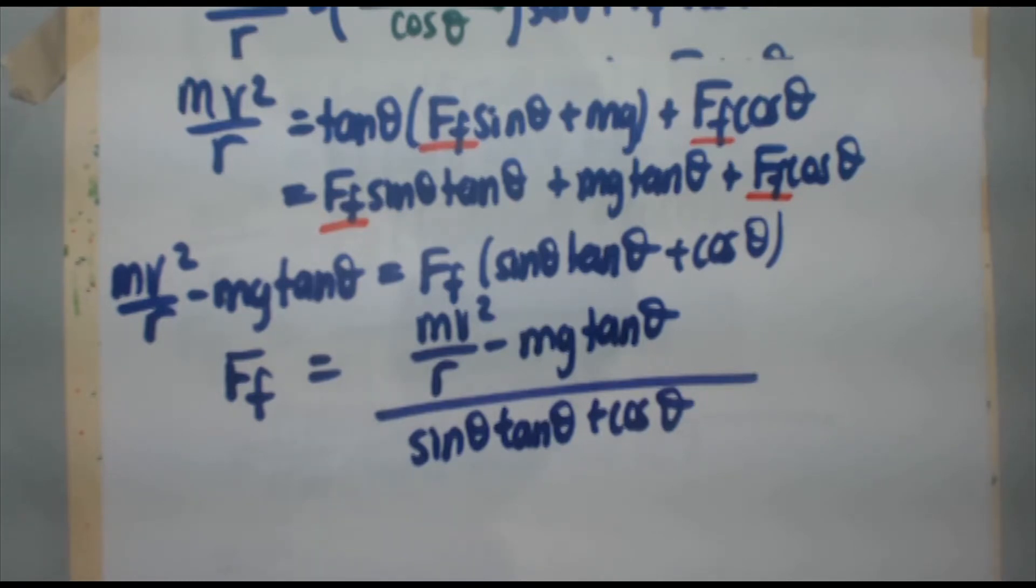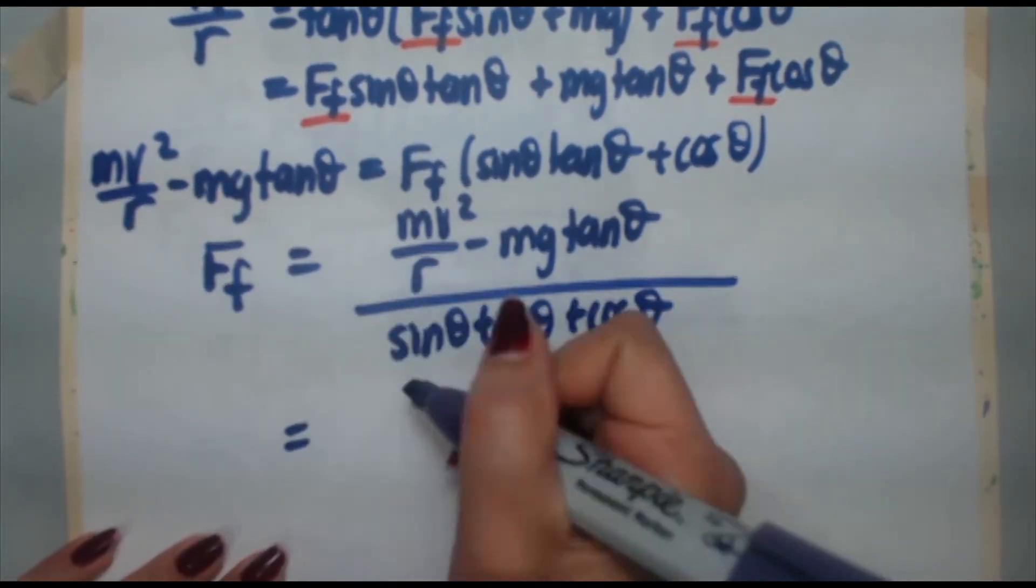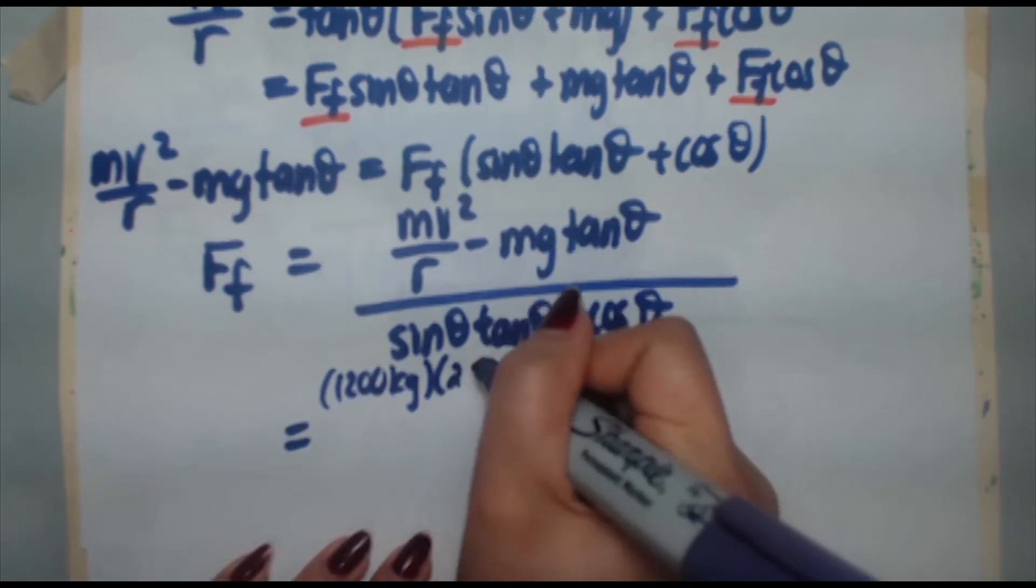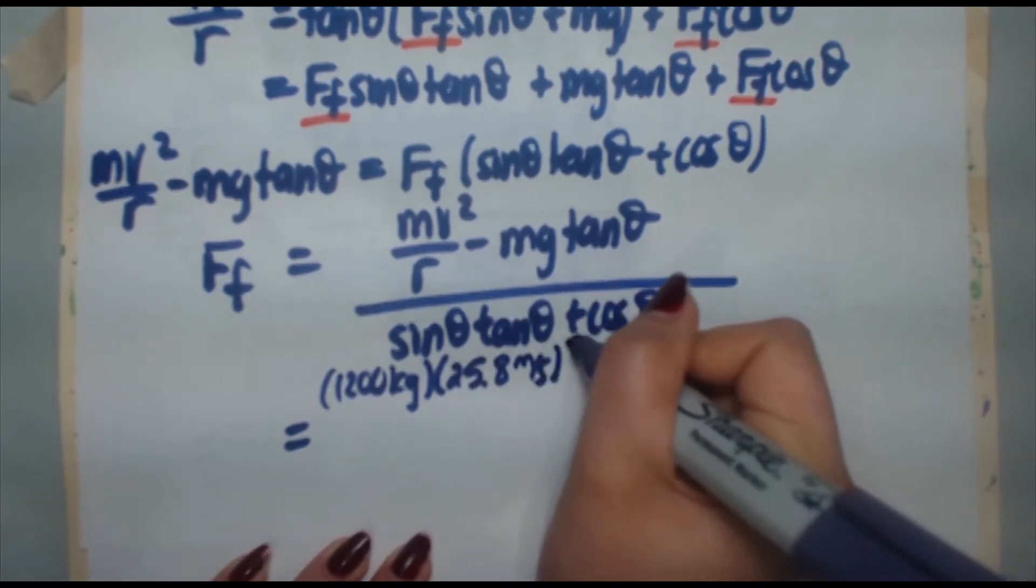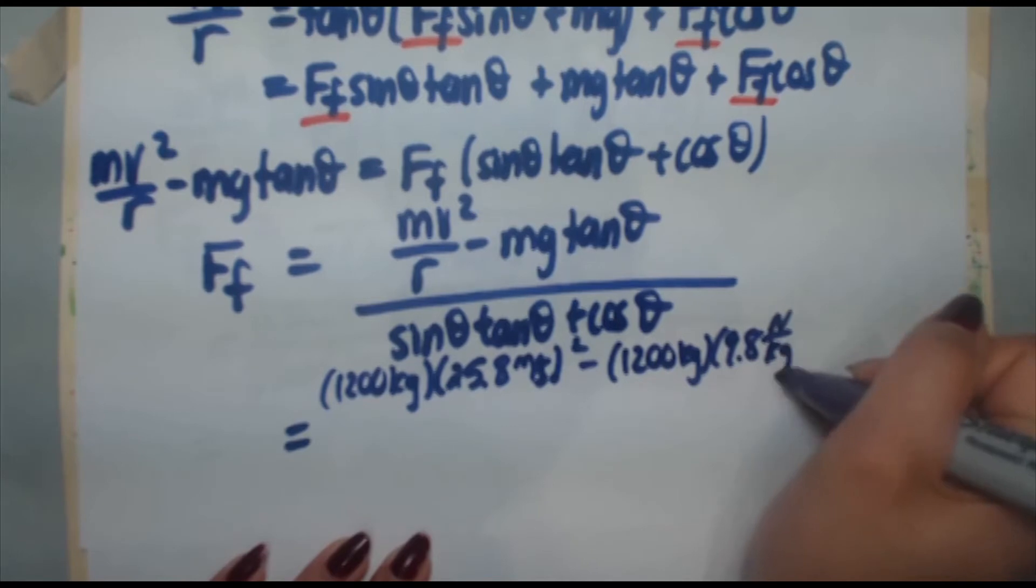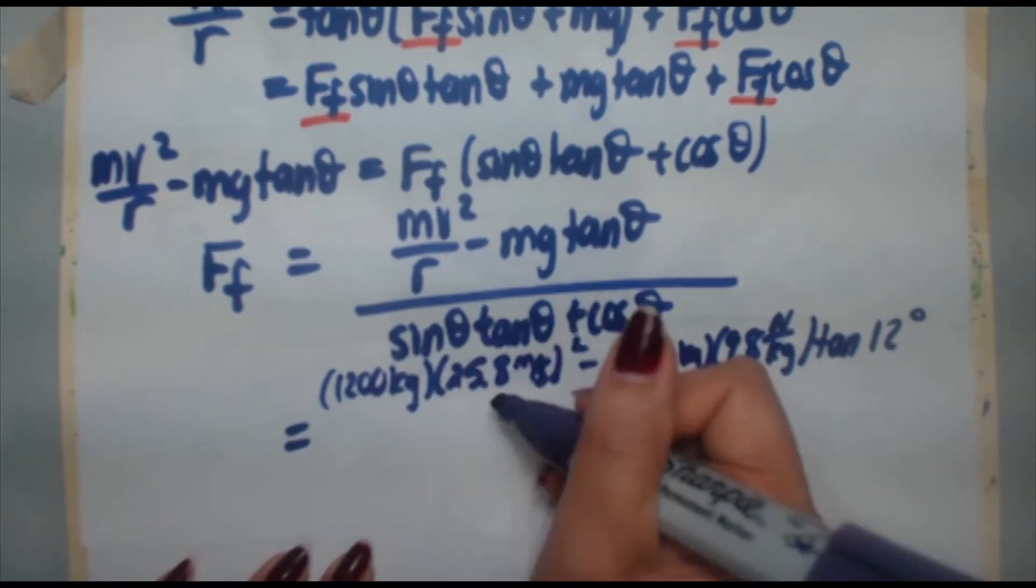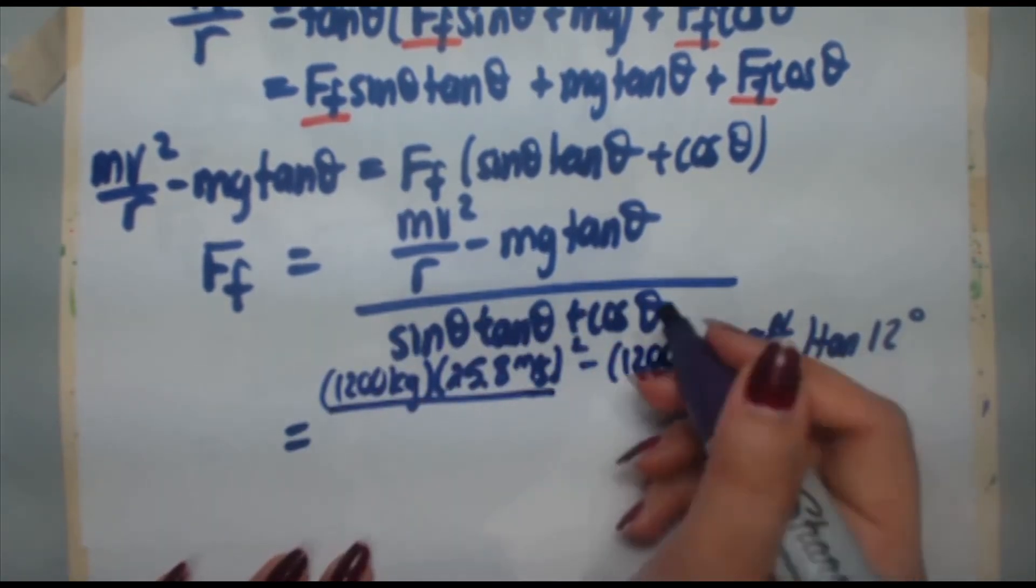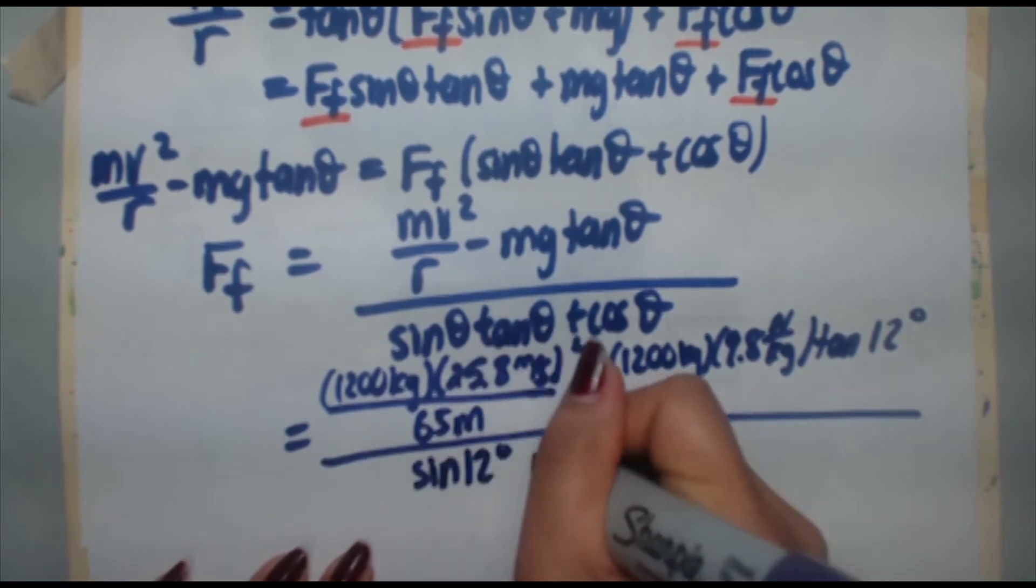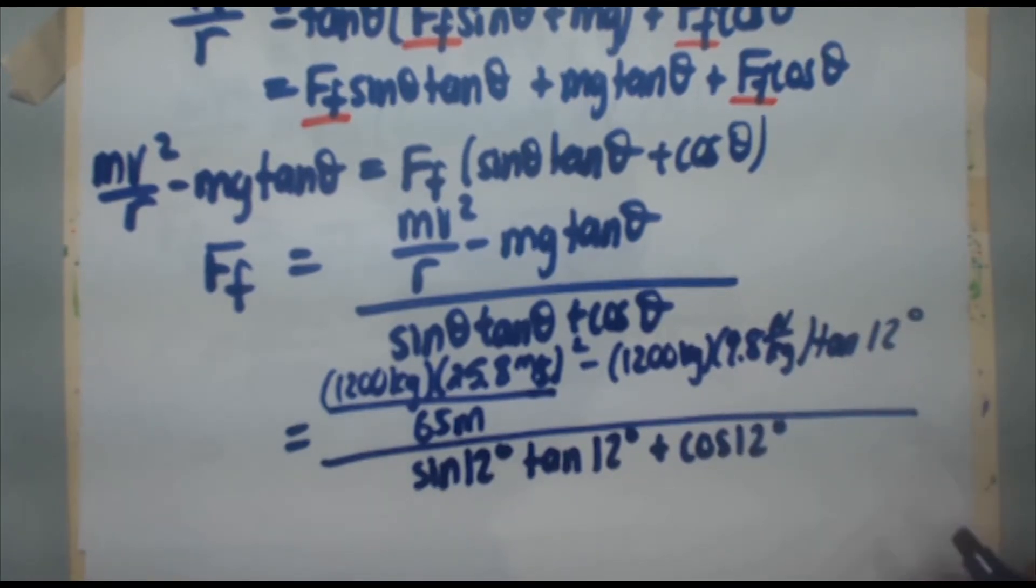All that's left for me to do is plug in my numbers and punch them into the calculator. mv squared, mass of the car, 1200 kilograms. My speed, I calculated at the beginning of video 82, 25.8 meters per second. That's squared minus 1200 times g, 9.8 newtons per kilogram, times tangent of theta. Theta is 12 degrees. Oh, I forgot the r here. The mv squared over r. The radius is 65 meters. All of that divided by sine of 12 degrees times tangent of 12 degrees plus cosine 12 degrees.